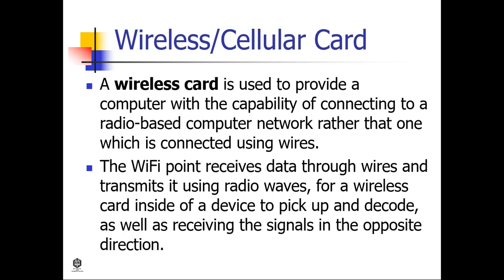How about a wireless or cellular card? A wireless card is used to provide the computer with the capability of connecting to a radio-based computer network rather than one which is connected using wires. This can come pre-installed inside the computer or laptop or be external, although almost all modern devices come with this already included. The most common use of this card is to allow a device to connect to Wi-Fi using a wireless router or access point. The Wi-Fi point receives data through wires and transmits it using radio waves, for a wireless card inside of a device to pick up and decode, as well as receiving the signals in the opposite direction.